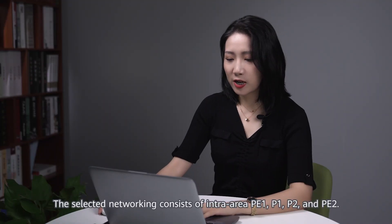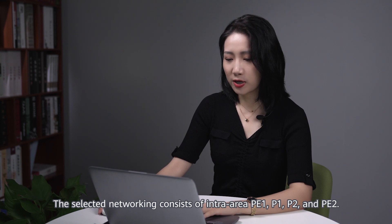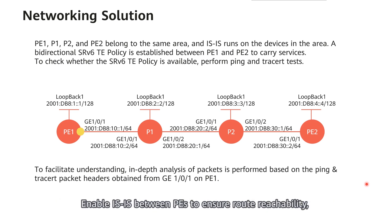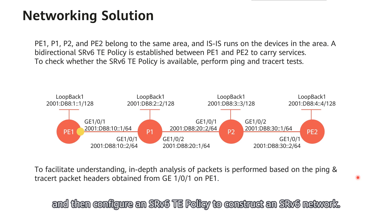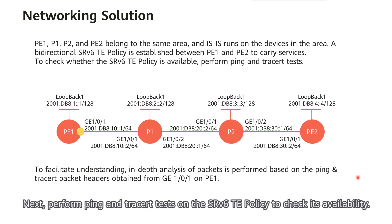The selected networking consists of intra-area nodes P1 and P2. IS-IS is enabled between the P nodes to ensure route reachability, and then an SRV6TE policy is configured to construct an SRV6 network. Next, PIN and TRACERT tests are performed on the SRV6TE policy to check its availability.